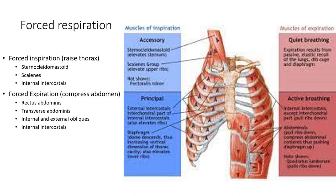Besides normal respiration via the diaphragm, you have muscles of forced respiration. A lot of these muscles are used to a small degree when breathing quietly, but when breathing heavily you can see these accessory muscles. The sternocleidomastoid and the scalenes group pull the chest up, which increases volume and decreases pressure so you can breathe in more easily. These are muscles of forced inspiration found in the neck. The serratus muscles are also used. When you want to breathe out more than usual, you use the rectus abdominis, transverse abdominis, and internal and external obliques to put more pressure on the abdominal cavity, pushing up on the diaphragm to push air out.